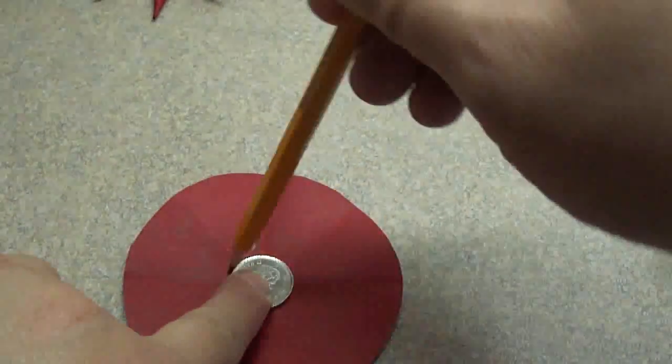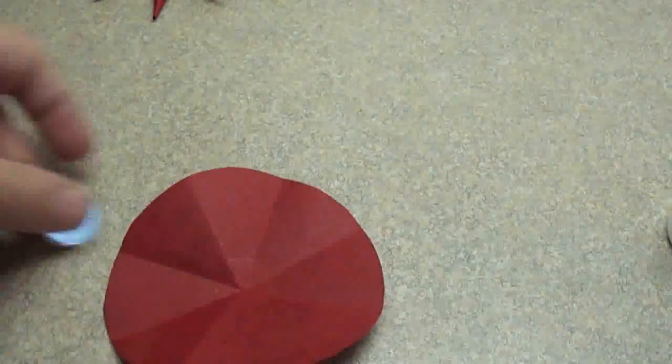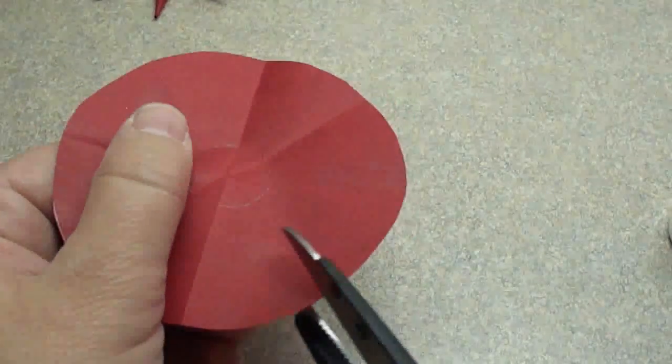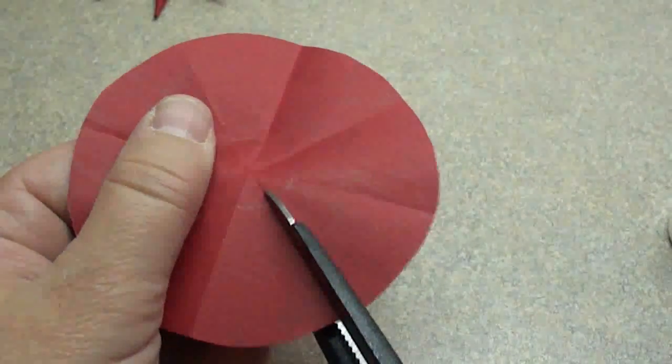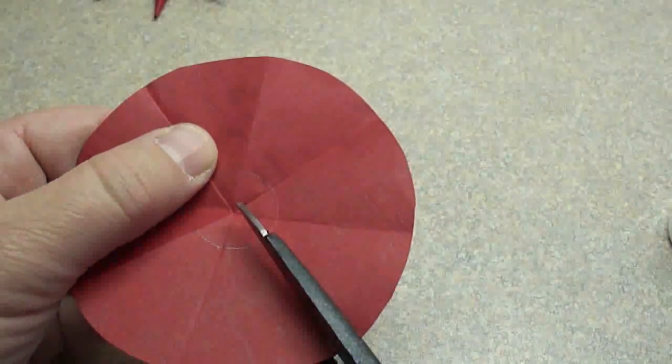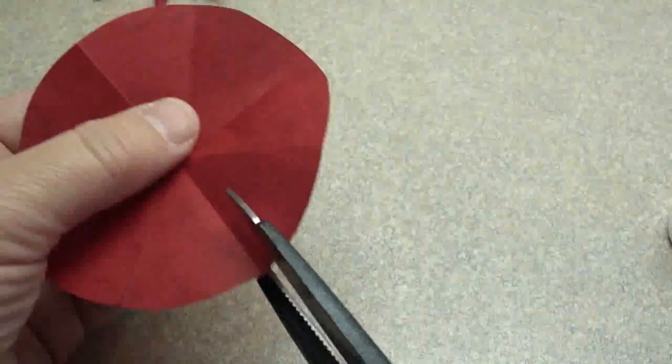Then you're going to draw a circle in the middle. I find a nickel is about the right size circle in the center, about an inch in diameter. Then you're going to cut along those folded lines that you made, right up to the drawn circle. You don't want to go right to the center, you're just going to go about an inch from the center.